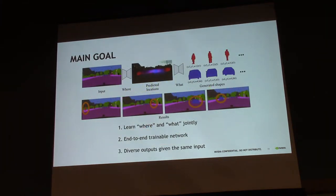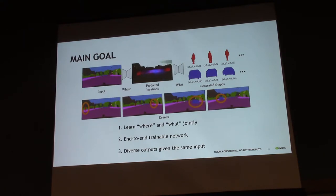That summarizes our three goals. Given this input, we want to predict where to put objects and what their shape should be — learning where and what jointly. We also want diverse outputs. Given the same input, we want to place a person on the left or on the right, or a car on the right or the left, so the generated shape is contextually symmetrical.